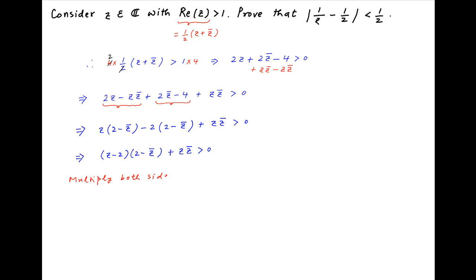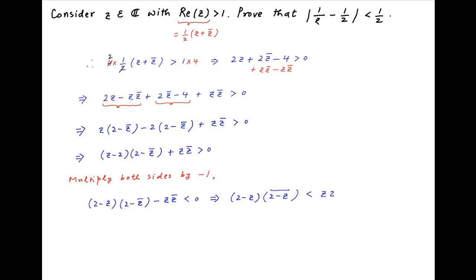Now, multiply both sides by minus 1. We get (2 minus z) times (2 minus the conjugate of z) minus z times the conjugate of z is less than 0. And this can be written as (2 minus z) times the conjugate of (2 minus z) is less than the product of z and its conjugate.